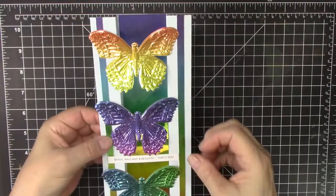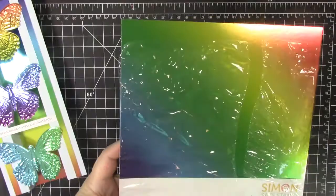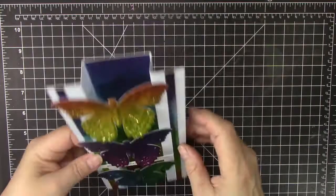The holographic rainbow cardstock that I used is from Simon Says Stamp. And it's rainbows, as you can see, on the butterflies, but also on that background. So here's how I made that.